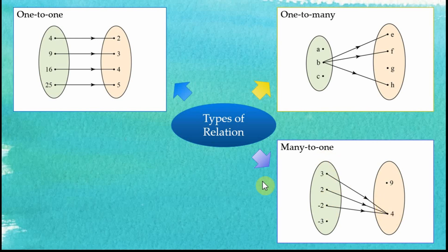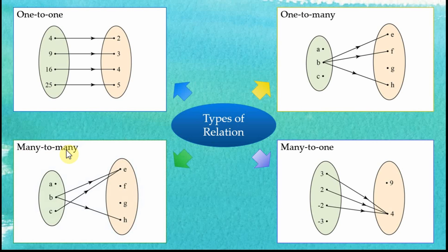And the last one is called many-to-many. For many-to-many relations, one object is mapped to more than one image, and at the same time, more than one object is mapped to one image. So these are the four types of relations that you need to know.